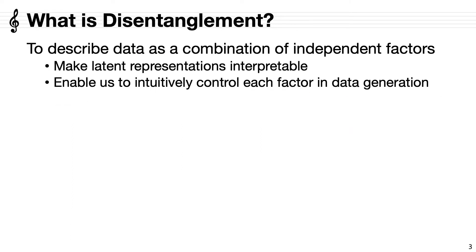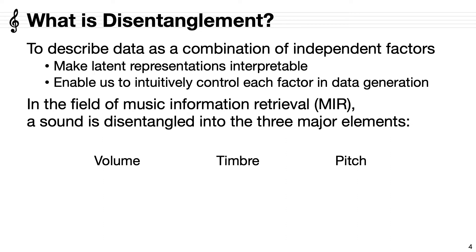What is disentanglement? Disentanglement is to describe complex data as a combination of independent factors so that each factor affects a particular aspect of the data. Disentanglement makes latent representations interpretable and enables us to intuitively control each factor in data generation. Especially in the field of musical information retrieval, a sound is disentangled into the three major elements: volume, timbre, and pitch.